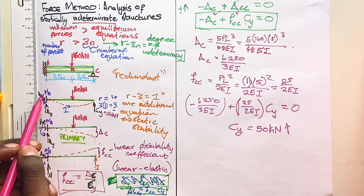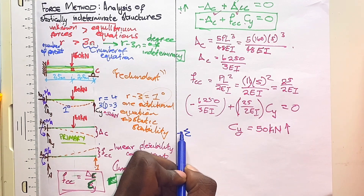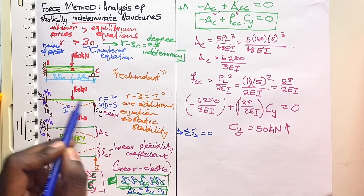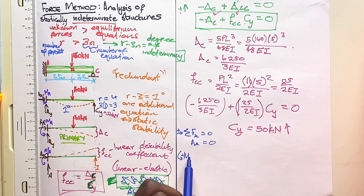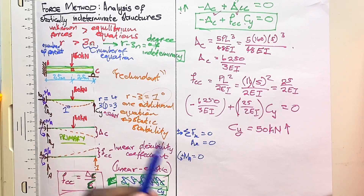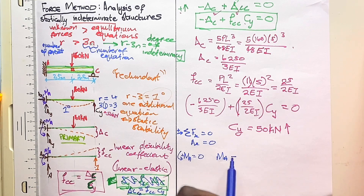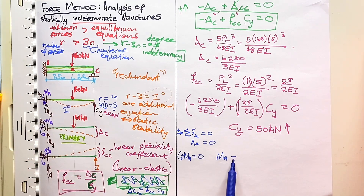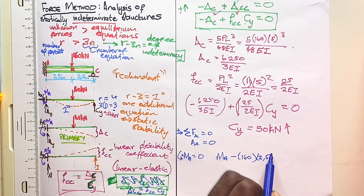Now we use equilibrium equations to find the remaining unknowns. Taking right as positive, the sum of forces in the x-direction equals zero — Ax is the only horizontal force, therefore Ax = 0. Taking the sum of moments about A with anticlockwise positive: moment Ma is positive, the 160 kN force at 2.5 meters from A causes a clockwise rotation so it is negative (−160 × 2.5), and Cy acting upward at 5 meters from A is anticlockwise (positive).